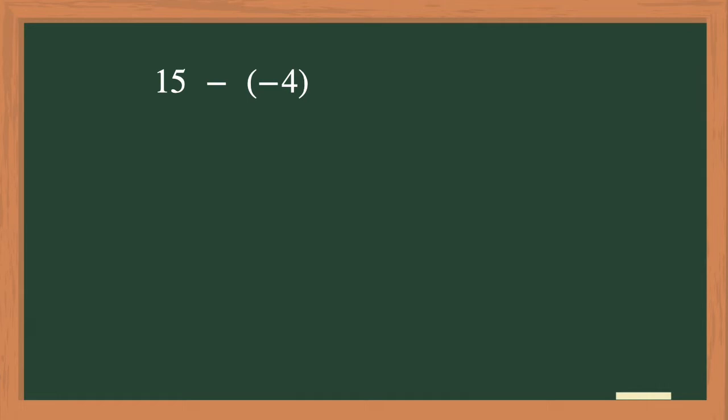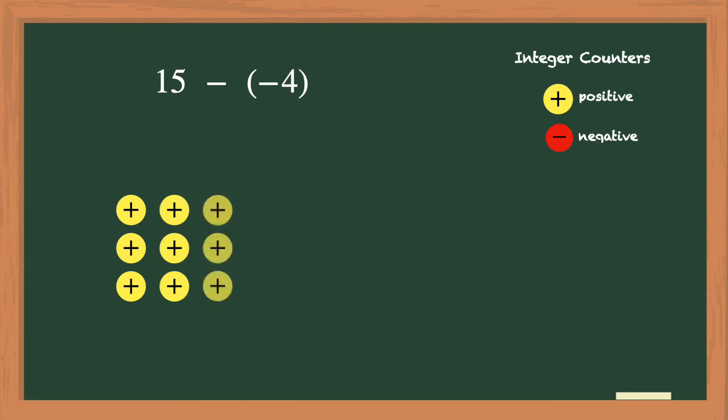Let's look at this expression of positive 15 minus negative 4. We are going to use the integer counters to solve this problem. Positive 15 is the first term, so we'll place 15 positive counters below. So we have 3, 6, 9, 12, and 15 positive counters.